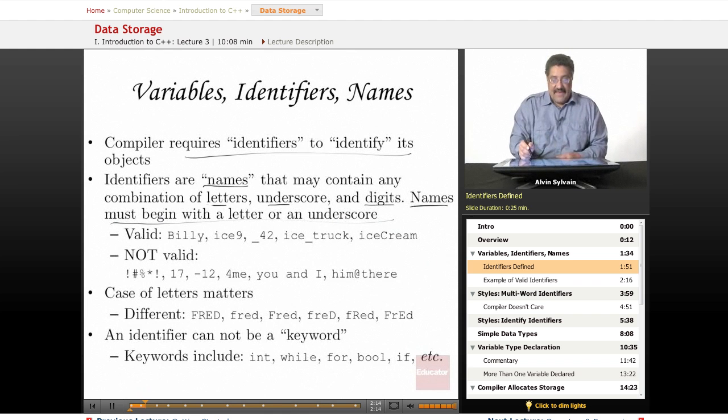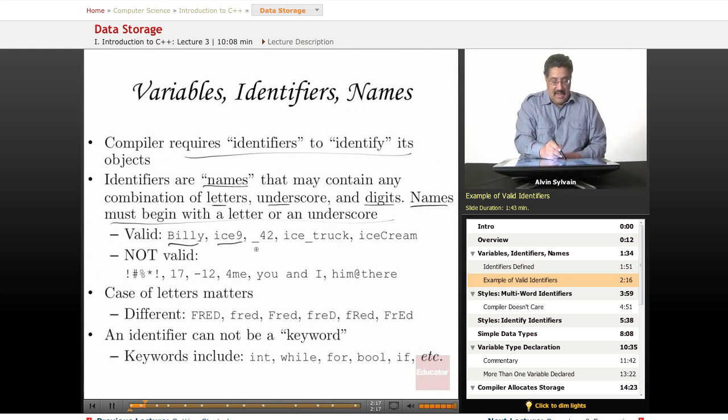So here's some valid identifiers. We have Billy, we have Ice9, we have underscore 42, Ice Truck, Ice Cream.